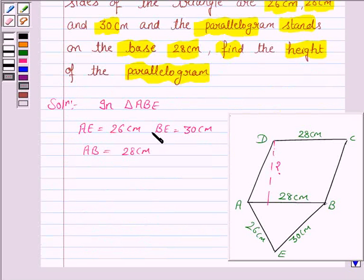Now, we will find the area of this triangle by Heron's formula. We need to find S which is A plus B plus C divided by 2, where A is 26 cm, B is 30 cm and C is 28 cm.